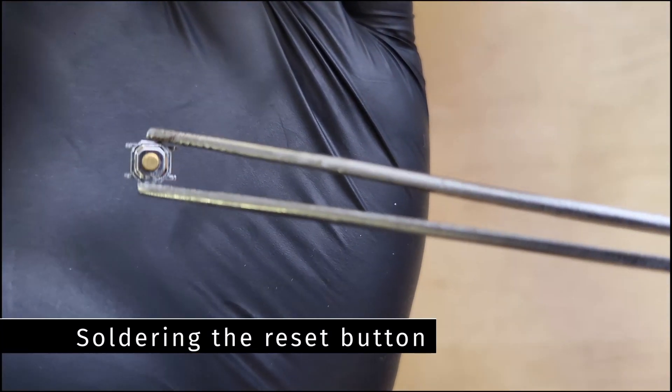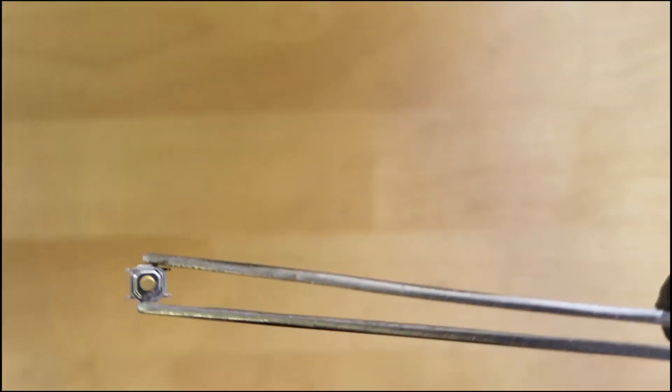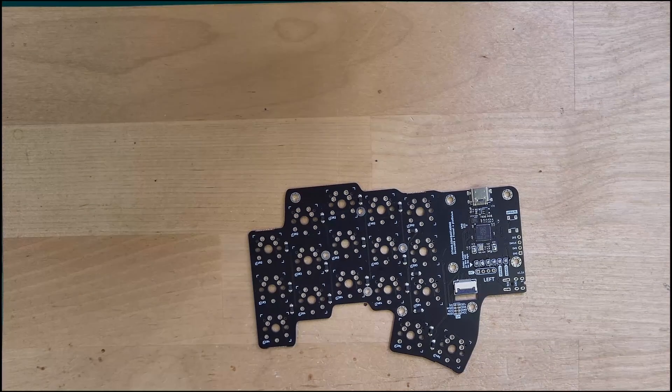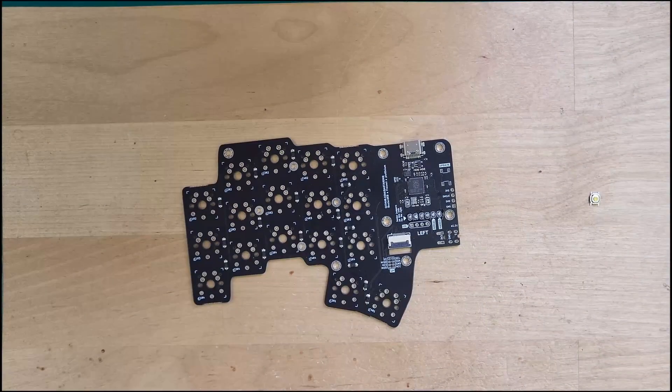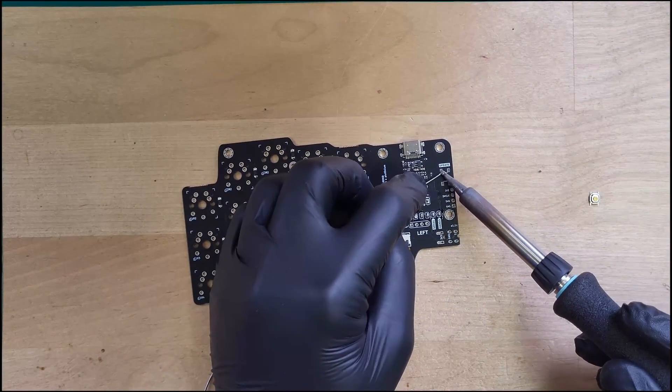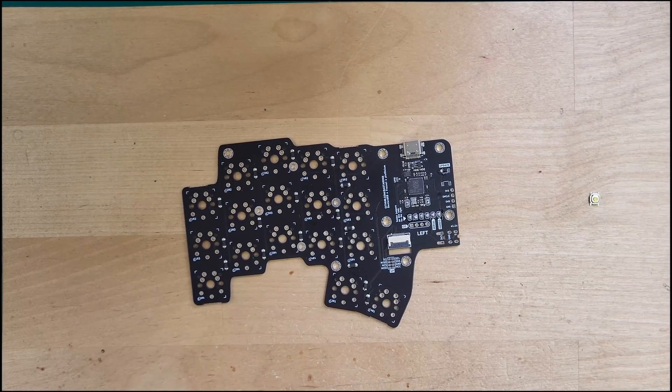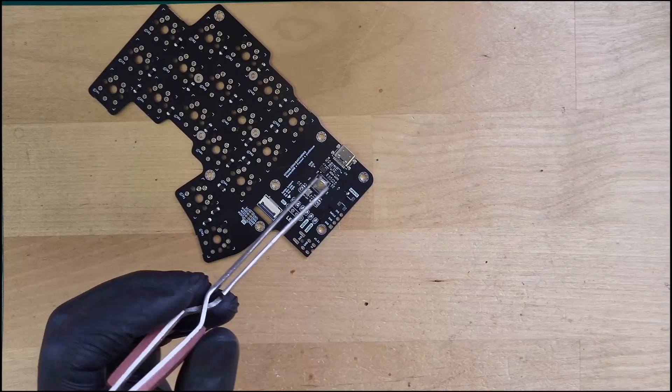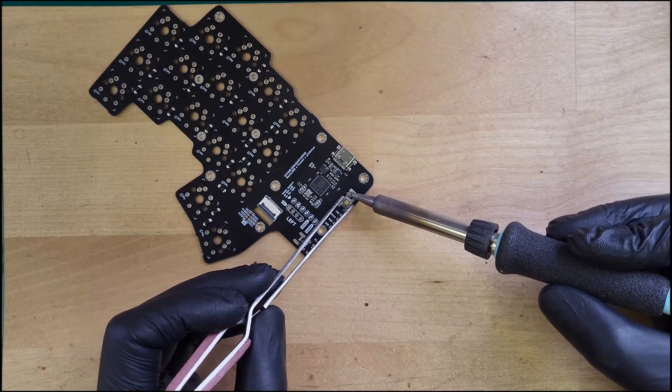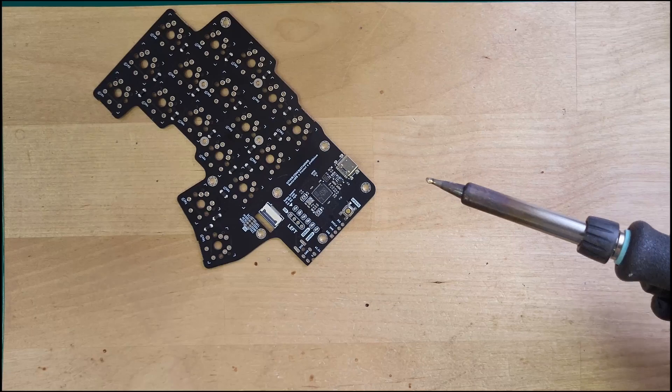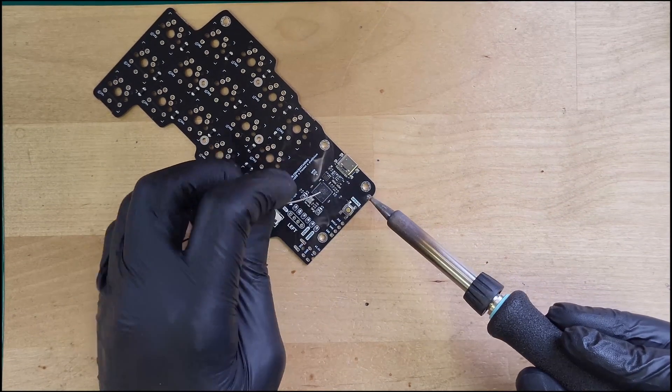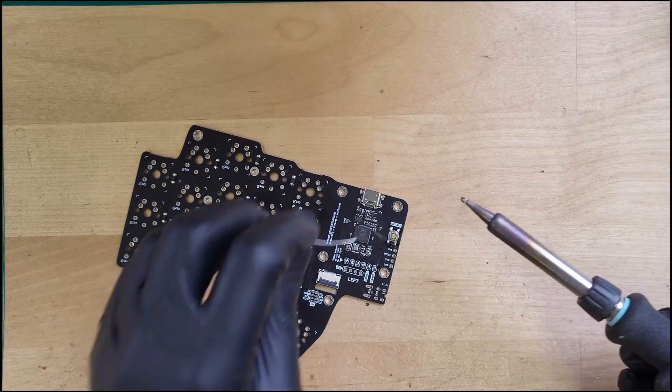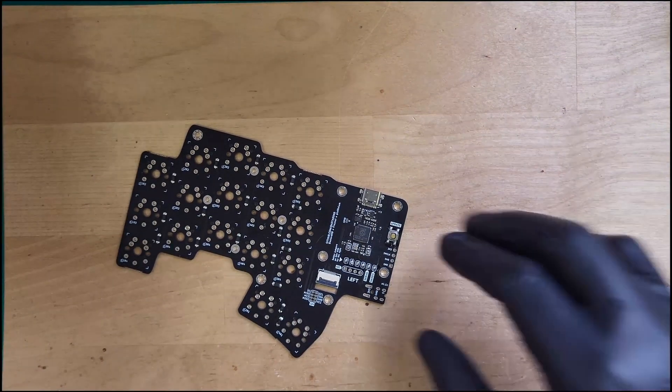Next on the list, we will install the reset buttons. Those go next to the big update label. We will install them on the same side as we just soldered the jumper pads. Start by adding a little bit of solder on one pad. Then, holding the reset button with some pliers, melt the pad and install the button. Finish by soldering the three other pads. Do this for the other side as well.